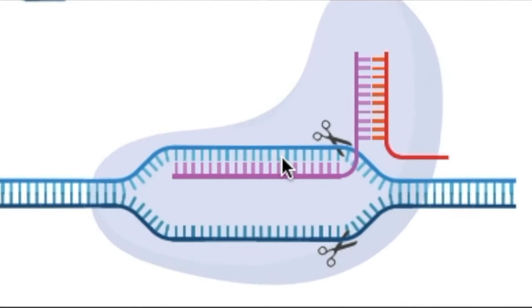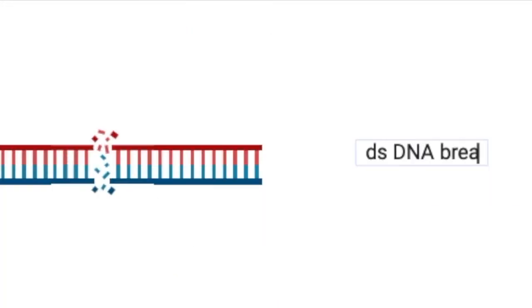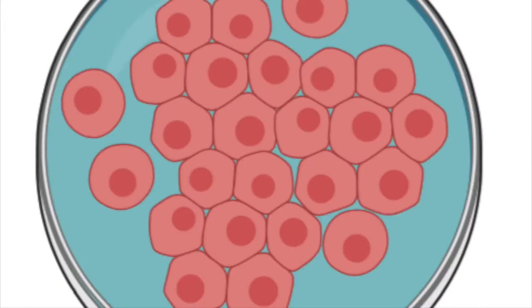Following Cas9-mediated double-stranded DNA break in a target region of the genome, a eukaryotic cell will attempt to repair the break. There are several mechanisms that the cell may use to repair the break, but there are two main repair pathways.